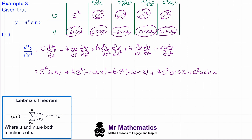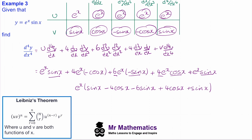We tidy this up by factoring out e^x, giving us e^x·(sin(x) − 4cos(x) − 6sin(x) + 4cos(x) + sin(x)). The −4cos(x) and +4cos(x) cancel, and collecting the sin(x) terms gives us −4e^x·sin(x), and this will be our fourth derivative.